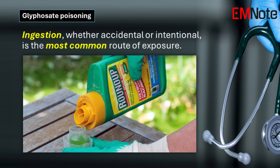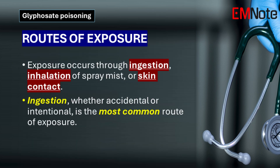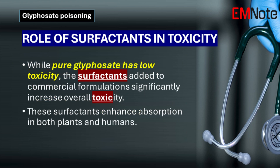Exposure to glyphosate can occur through ingestion, inhalation, or skin contact. Accidental or intentional ingestion is a common route, as is inhalation of spray mist during application. Skin contact with the herbicide, particularly if the product is concentrated or contains other ingredients, can also lead to poisoning.